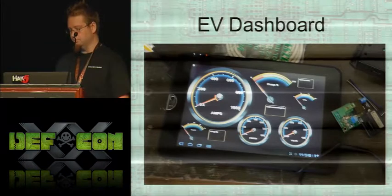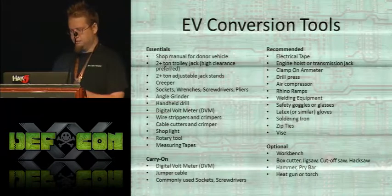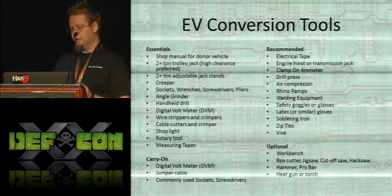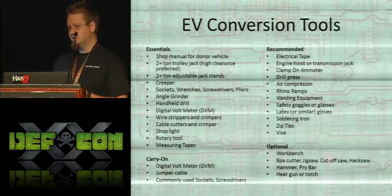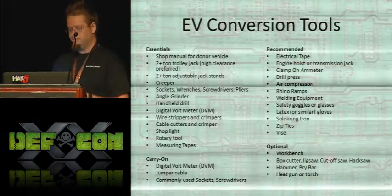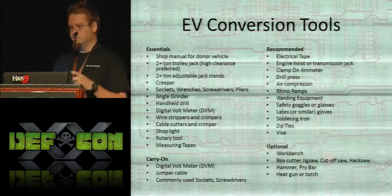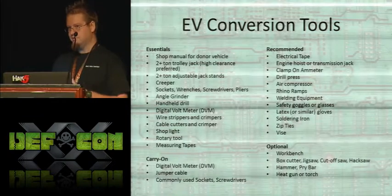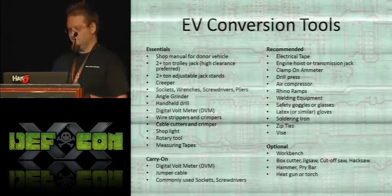For EV conversion tools, one important thing I wish I had done differently was get a high-clearance trolley jack — I spent a lot of time moving my jack back and forth to get the car high enough to remove the engine. Also, put insulation around the handles of all your tools. You don't want a tool to smack against a battery and short things out because then you've created a welder that you're holding. I didn't bother to do that until I had my first high voltage event, and then I went and did it.